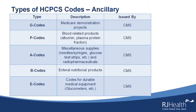P codes are for blood products. G codes are also interesting — these are Medicare demonstration products or projects. New flu codes can fall under G codes, as well as anything else CMS is trying to track related to new types of products or new treatments.